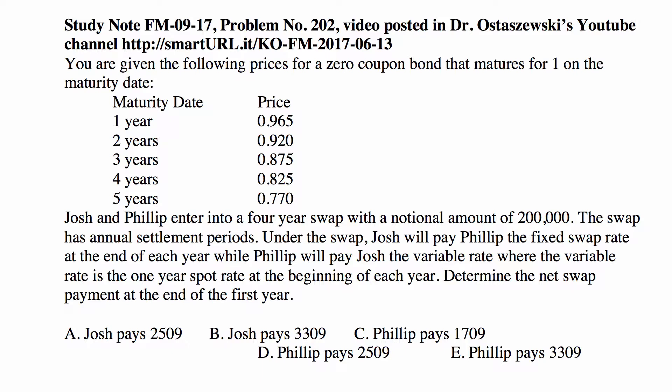Josh and Philip enter into a four-year swap with a notional amount of $200,000. The swap has annual settlement periods. Under the swap, Josh will pay Philip the fixed swap rate at the end of each year, while Philip will pay Josh the variable rate — where the variable rate is the one-year spot rate at the beginning of each year. Determine the net swap payment at the end of the first year, taking a close look at the times of payments and how the interest rates are determined.